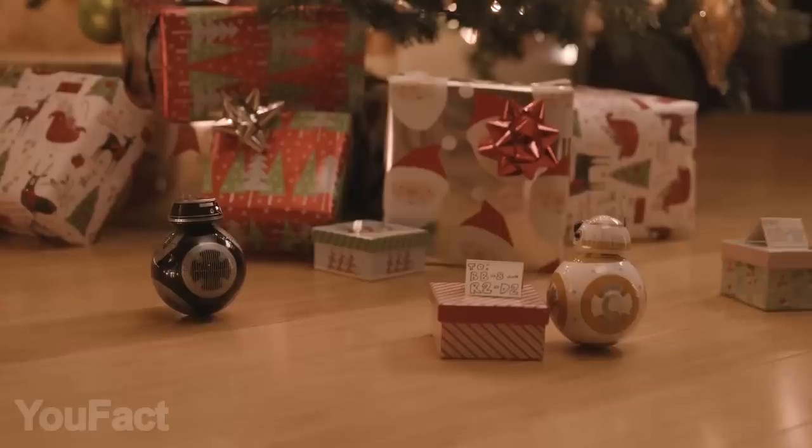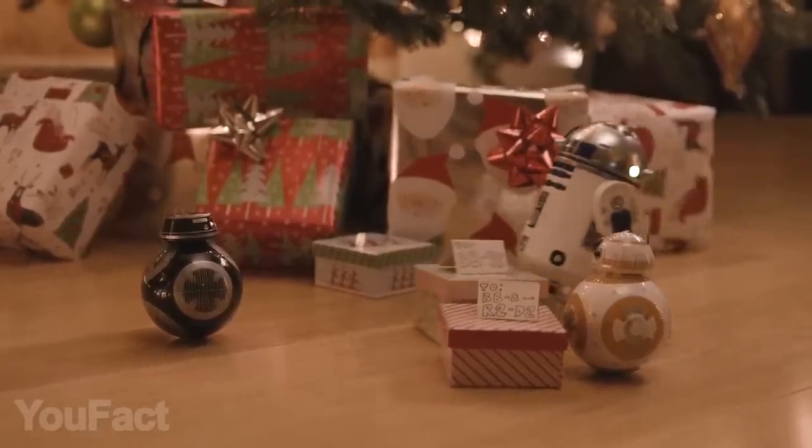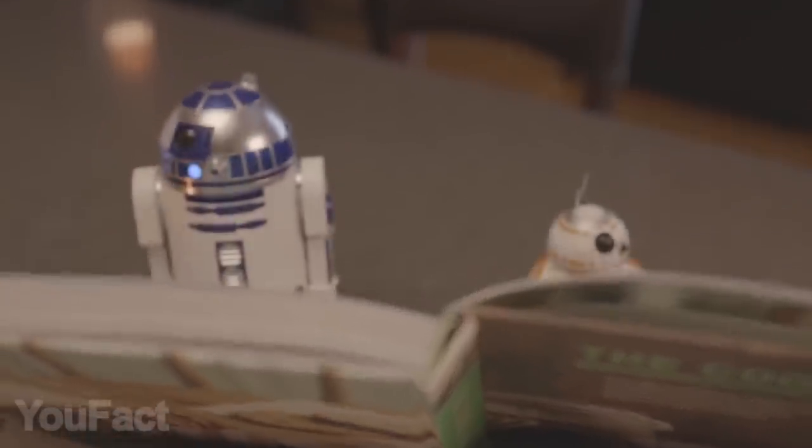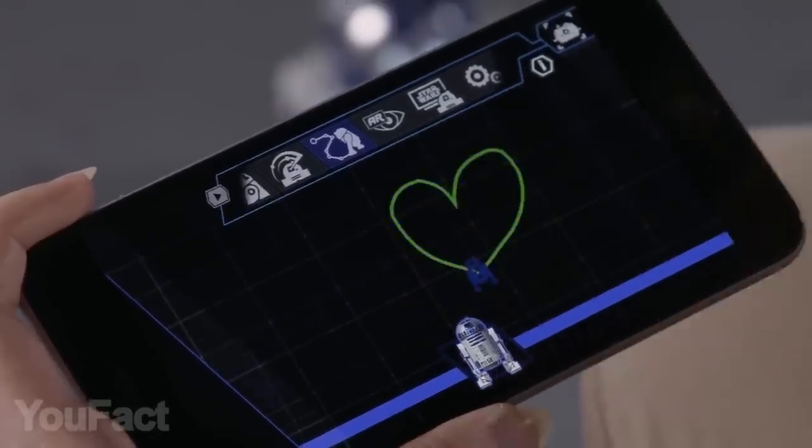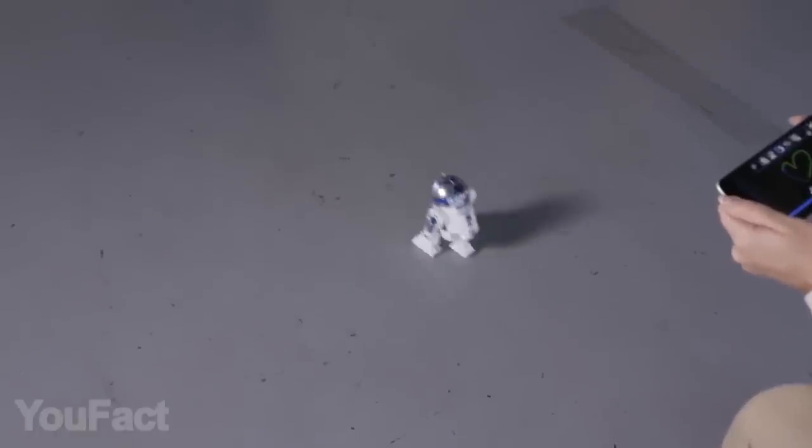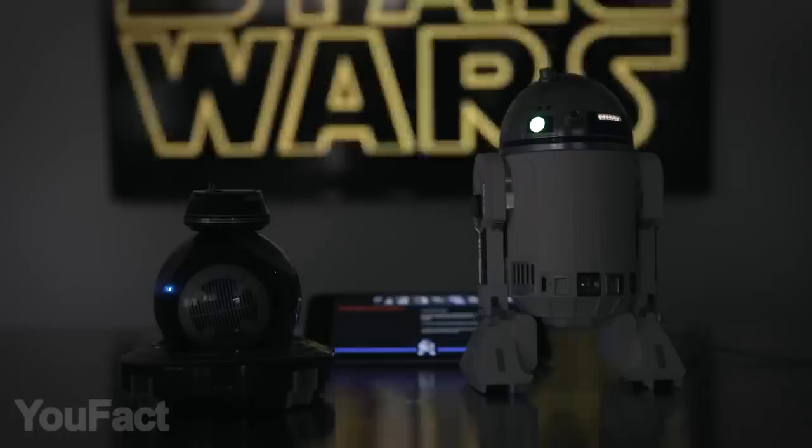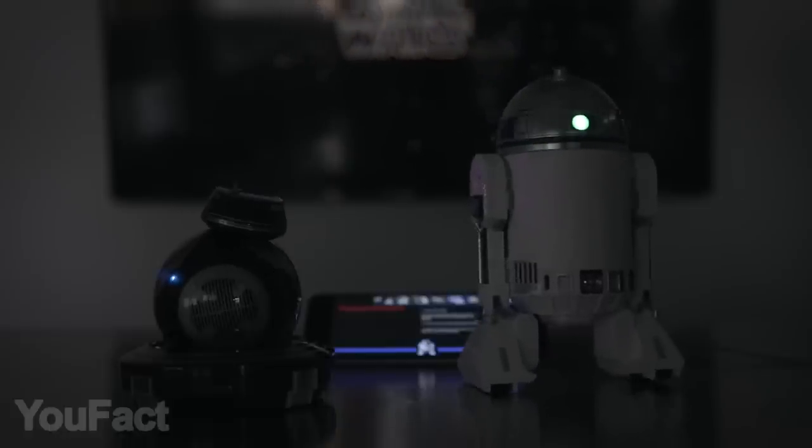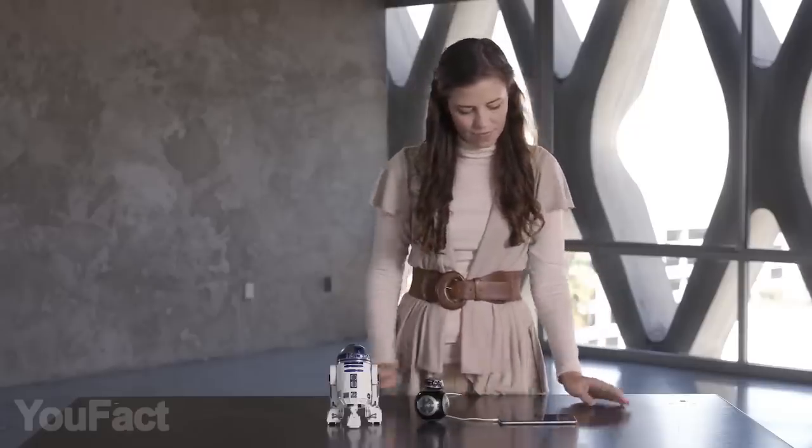The integrated speaker allows the droid to produce the same sounds as the original one from the movie. Moreover, the LED lights are completely functional too. Using the mobile app, you can program your R2 to perform some simple tasks. There's a special mode for viewing Star Wars with the droid by your side, reacting to what's happening on the screen. Don't tell me you didn't want this when you were a kid.